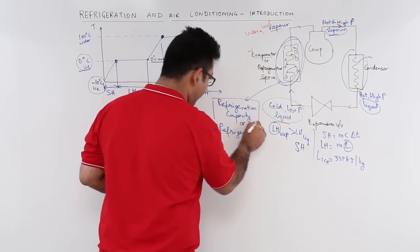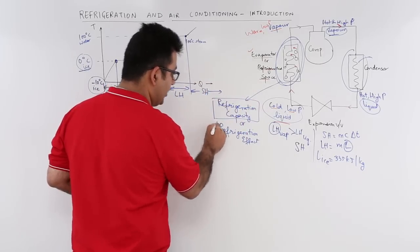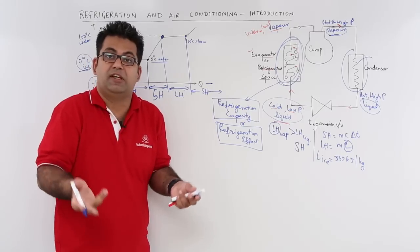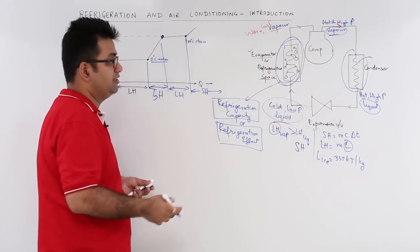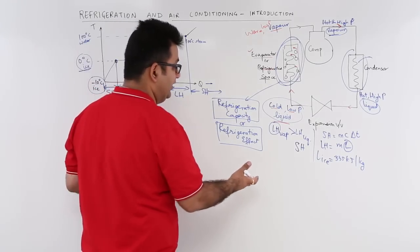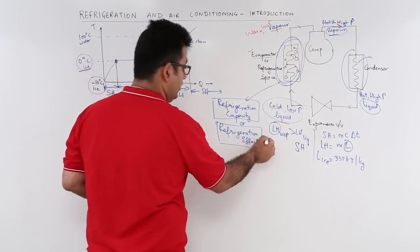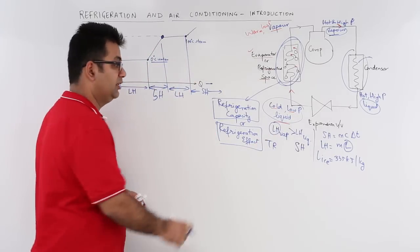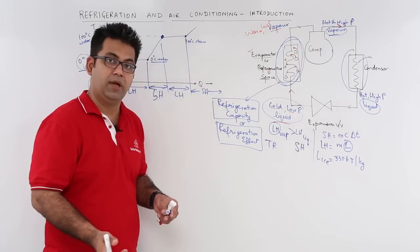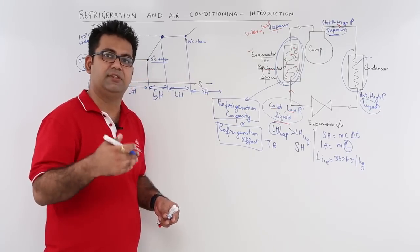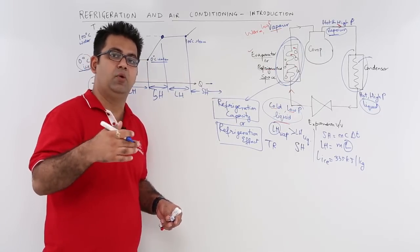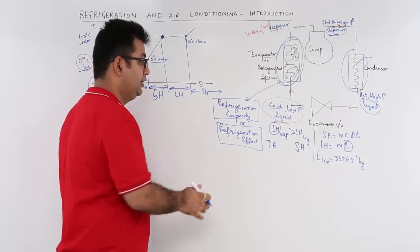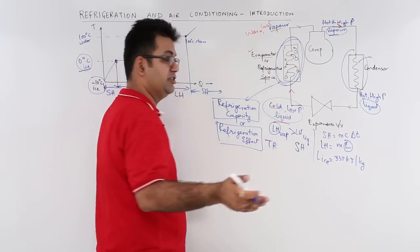The refrigeration effect is a physical quantity, so we need units to describe it. The units to describe the refrigeration effect are TR — that is ton of refrigeration. In common practice we just say 1 ton, 2 ton of refrigeration, but it is TR — ton of refrigeration.